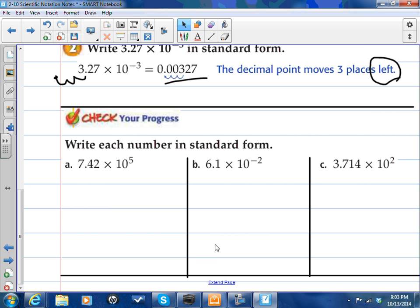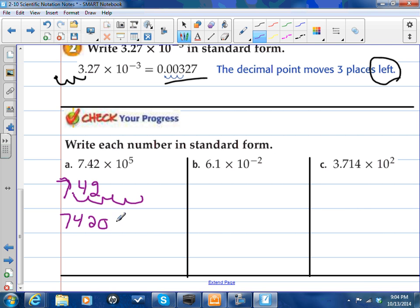So, pretty simple, just moving left and right. So I have 7.42 times 10 to the 5th. So, what that 5 tells me is how many places to move the decimal. The fact that it's positive tells me which direction. So, I move it 5 places to the right. So, that's 1, 2, 3, 4, 5. And, I'm going to fill in now zeros, 742,000 is the same as 7.42 times 10 to the 5th power.